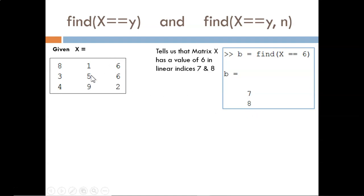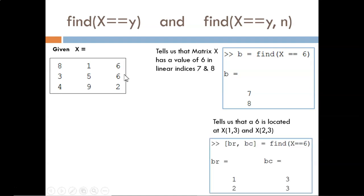The first 6 is located at linear index 7: 1, 2, 3, 4, 5, 6, 7. And the next 6 comes right after, at index 8. To find the row and column indices, again, I simply need to request two output arguments. The first 6 is located at row 1, column 3. The second 6 is located at row 2, column 3.